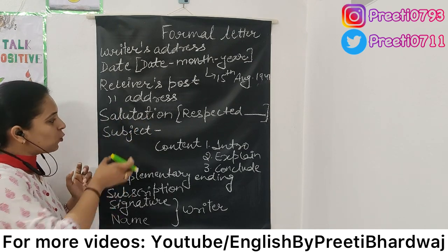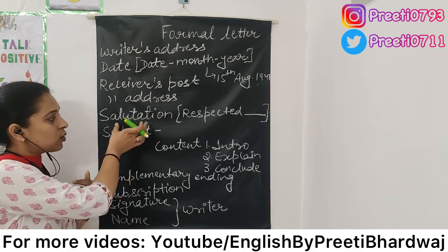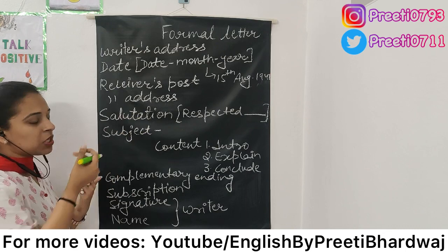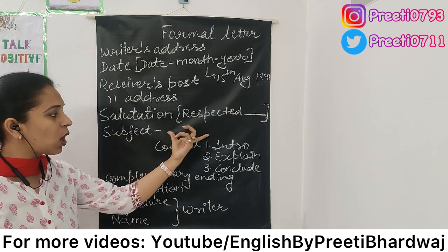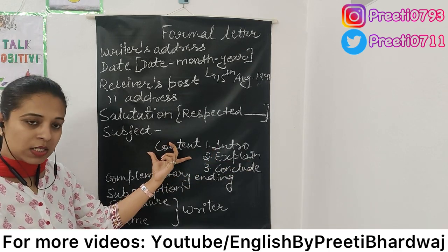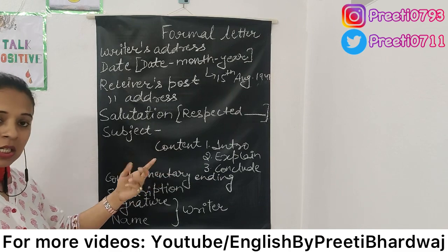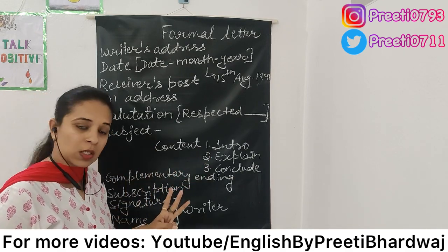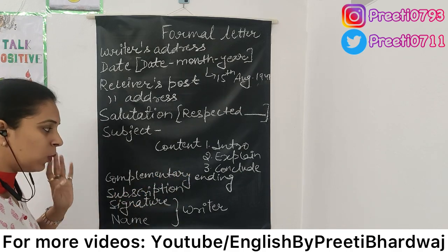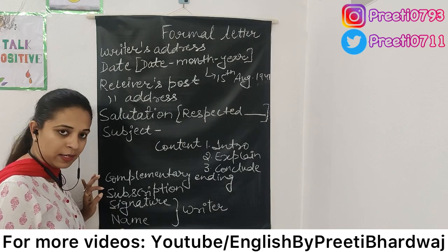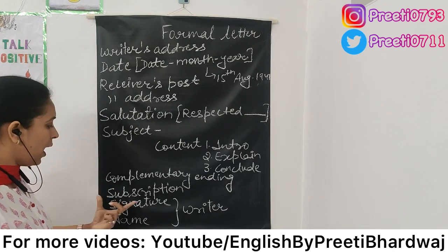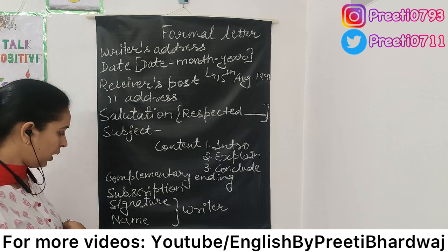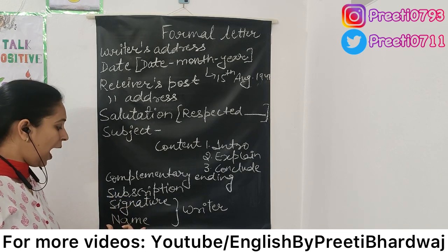Many students are confused about what comes first — salutation or subject. Salutation comes first, and in a formal letter it will be 'Respected Sir or Madam'. After salutation we leave a line and write the subject, which talks about the purpose of the letter. Then we begin with the content — the main body — divided into three paragraphs: the first for introduction, the second to explain further, and the third to conclude. After finishing the content we leave a line and give a complimentary ending like 'Thanking you'. After that we leave a line and write the subscription — for example, 'Yours truly', 'Yours faithfully', or 'Yours sincerely' — followed by the writer's signature and name.